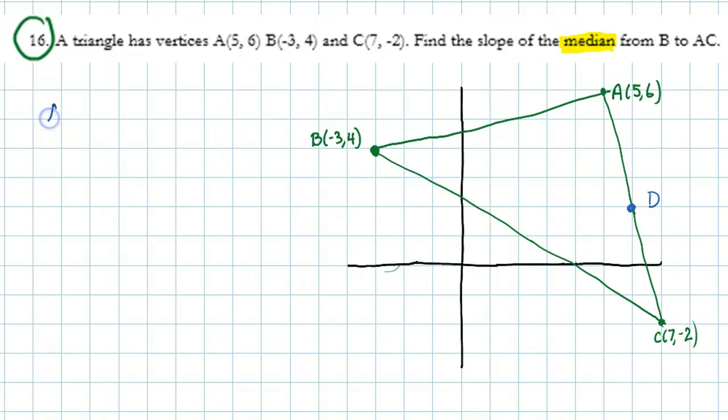So we're going to find the midpoint of AC. So what I do is I take my x values. There should be no equal sign there because I'm finding a point. So I'm going to say 5 plus 7 divided by 2, 6 minus 2 divided by 2. So the midpoint of AC is going to be 6, 2. And I've called it D, 6, 2.